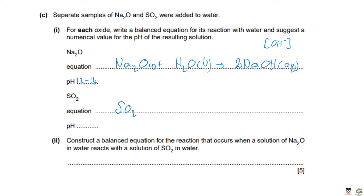For SO₂ plus water: SO₂ is an acidic oxide and reacts to produce an acid, in this case H₂SO₃ — sulfurous acid (systematic name: sulfuric(IV) acid, since sulfur has oxidation state +4). This contrasts with H₂SO₄, which is sulfuric(VI) acid. H₂SO₃ is in aqueous solution (aq). H₂SO₃ is a much weaker acid than H₂SO₄, so the pH will be higher — a sensible answer is anywhere between 2 and 5.